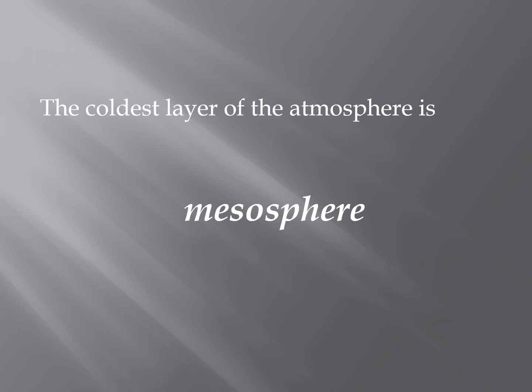Some interesting facts about the layers of the atmosphere: as we know, the earth's atmosphere is subdivided into many layers, but the coldest one is the mesosphere — it is the layer with the minimum temperature. Also, whatever meteorites or asteroids come towards the earth, they are destroyed when they enter this layer. So the mesosphere acts as a protective layer from meteorites and asteroids.